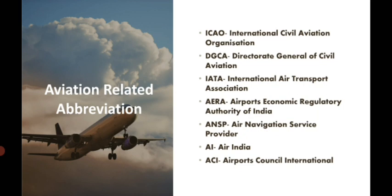Almost all countries — bearing a few exceptions — are members of ICAO. We need ICAO so that we have a common aviation law. If different countries followed different aviation laws, international travel would be very difficult — air traffic control in India following one standard and controllers in Myanmar, China, or Pakistan following something else would make things very difficult for controllers and pilots. That is why ICAO came into existence.